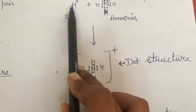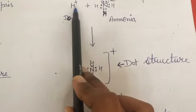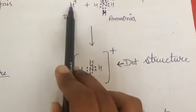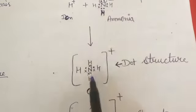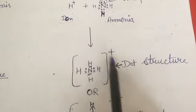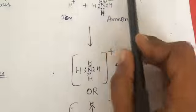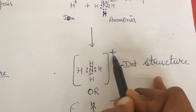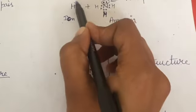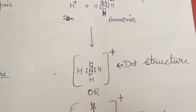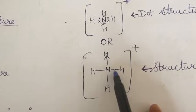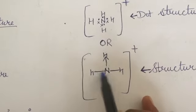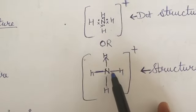After combination, both electrons are provided by nitrogen for sharing. The hydrogen ion does not have any pair of electrons — it is sharing the electrons of nitrogen. The structure formed is the ammonium ion, and the positive charge is due to the hydrogen ion. This is the dot structure of ammonium ion.